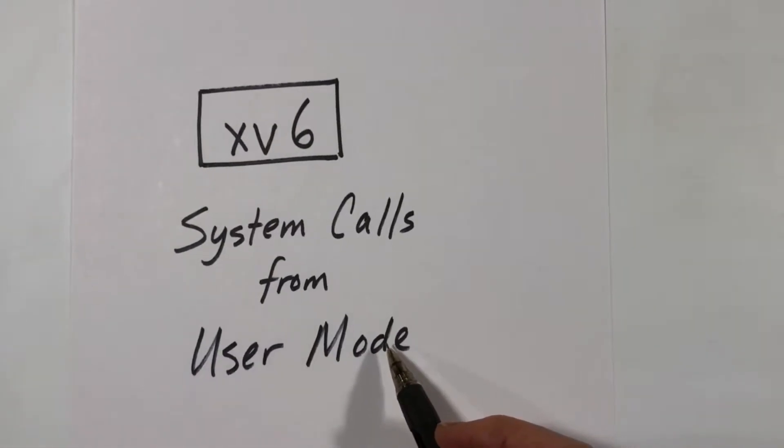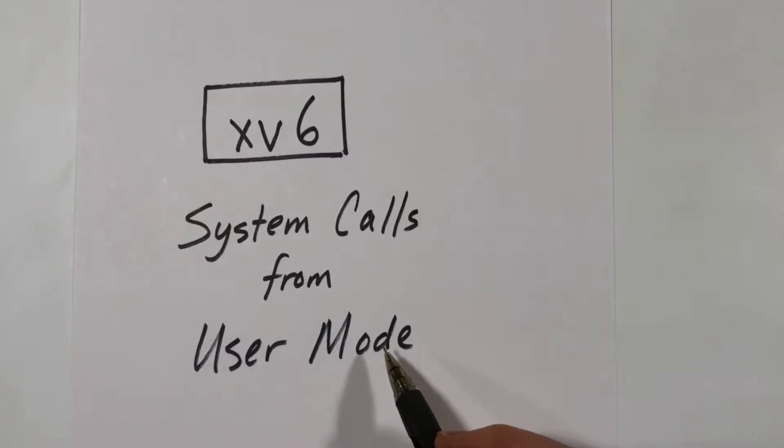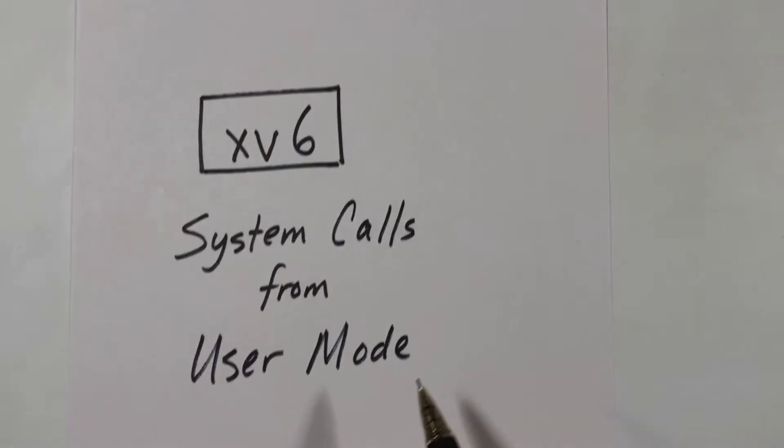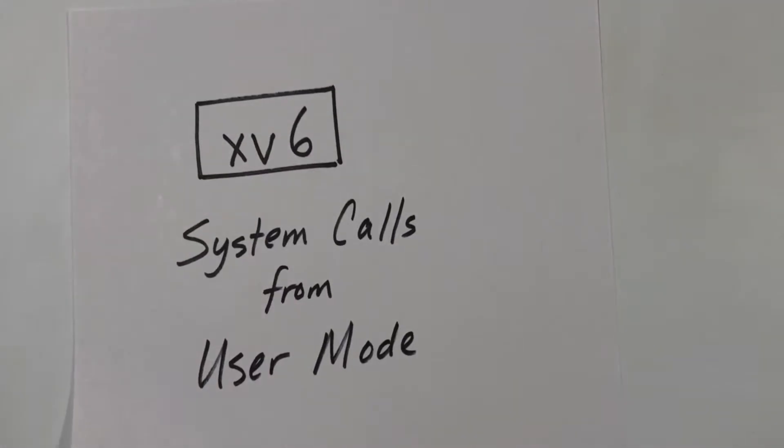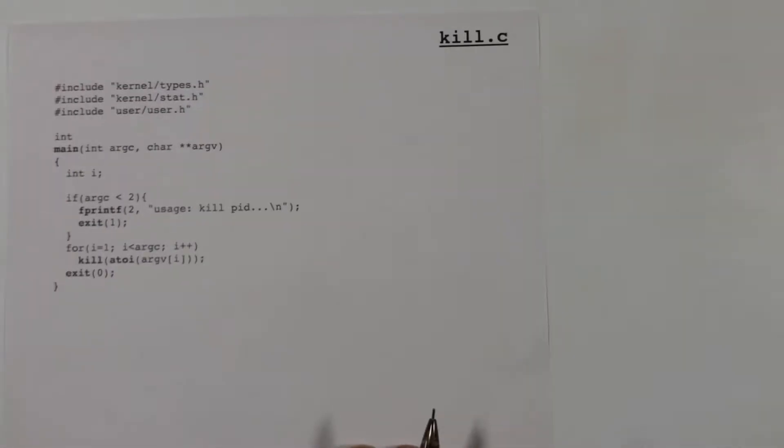I'll start by looking at a small C program that makes a couple of system calls. And then I'll look at the program called init code, which is the very first code that is executed in user mode. This program is written in assembly code, so be prepared. We'll see a little assembly code in this video. But let's start with the C program.